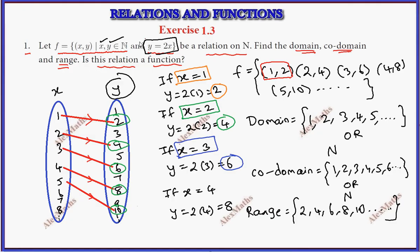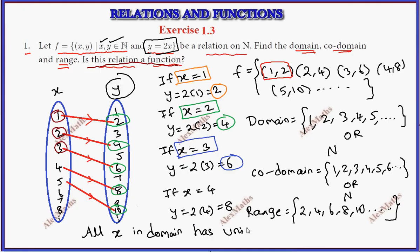The last part: is this relation a function? Every element in the domain has one element, one image. All x in the domain has a unique image in y, or the co-domain. Therefore, it is a function.